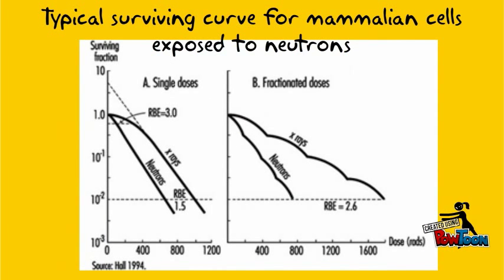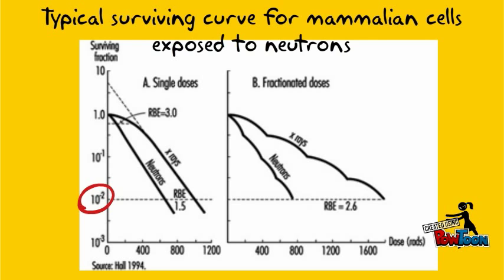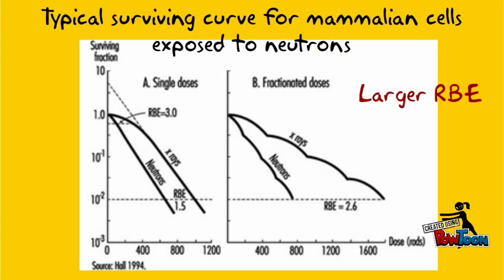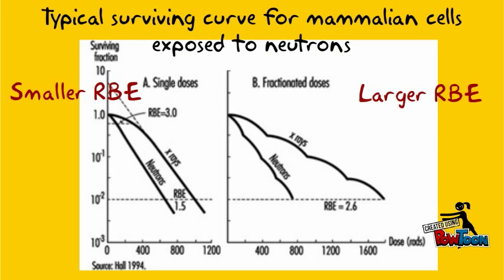And now, we are going to compare graph A and graph B. For a surviving fraction of 0.01, meaning 10 to the power of negative 2, the RBE for neutrons relative to X-rays is about 2.6 in graph B. The RBE for the same radiation in graph A at the same level of survival was 1.5. The neutron RBE is larger at a low dose rate, which is fractionated dose radiation, compared to an acute exposure in single dose.